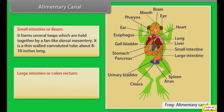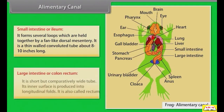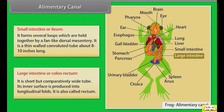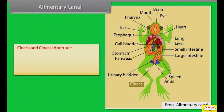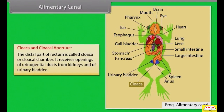The large intestine or colon rectum is short but comparatively wide; its inner surface is produced into longitudinal folds. It is also called the rectum. The distal part of the rectum is called the cloaca or cloacal chamber, which receives openings of urinogenital ducts from the kidneys and of the urinary bladder.